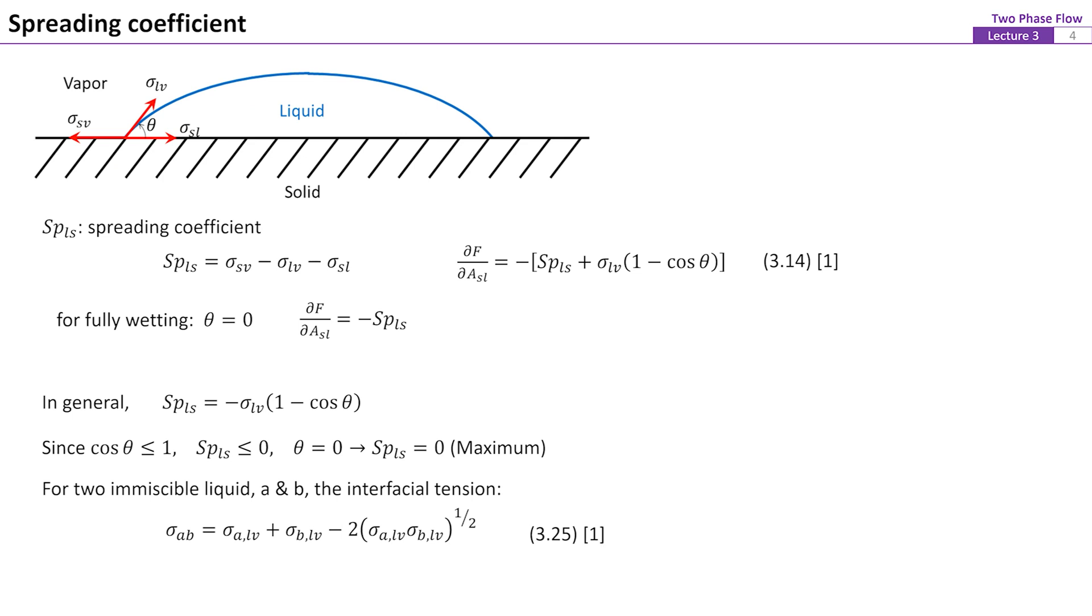Here we define a new parameter called the spreading coefficient. For a droplet on the solid surface as shown here in the figure, equation 3.11 can be rewritten in terms of spreading coefficient. For a surface that is fully wetted by the liquid, the contact angle is zero and the spreading coefficient represents the change of the free energy corresponding to the change of ASL.